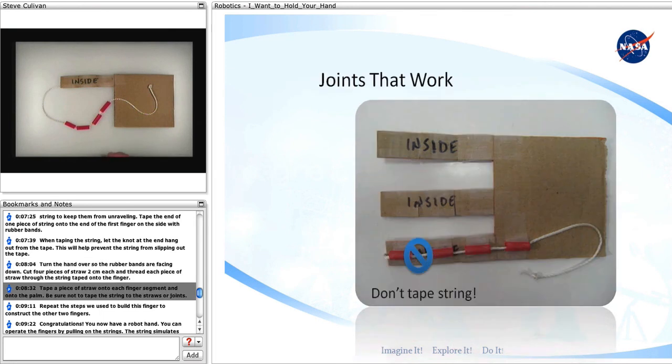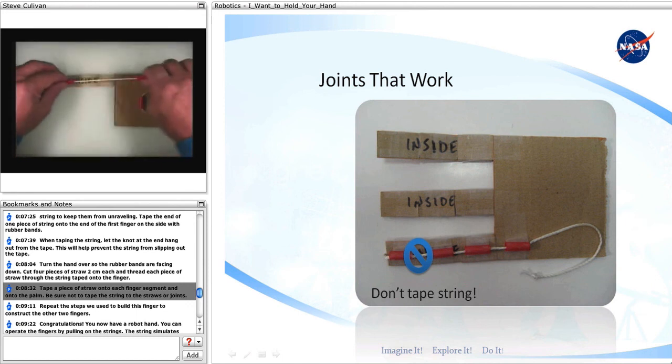Tape a piece of straw onto each finger segment and onto the palm. Be sure not to tape the string to the straws or joints. The string needs to move freely.